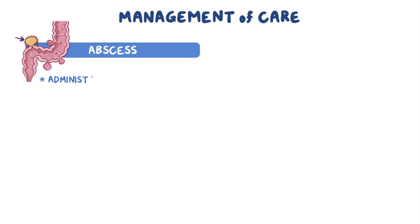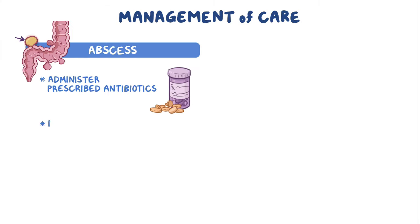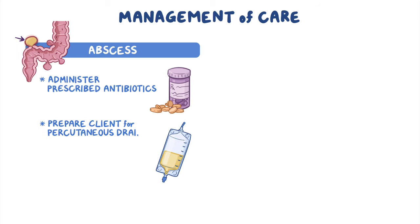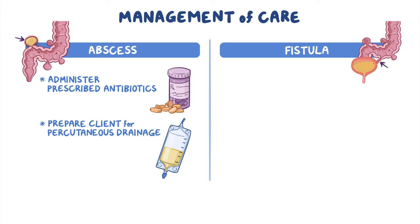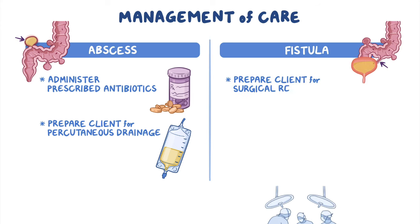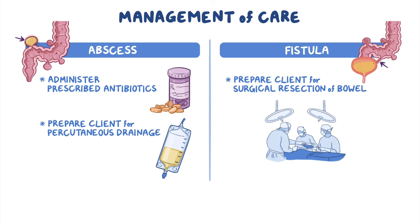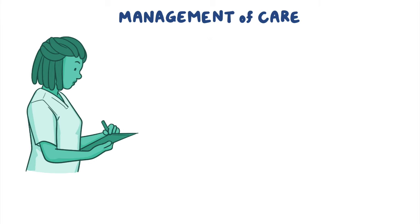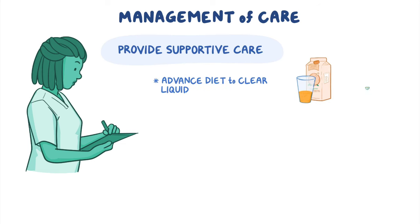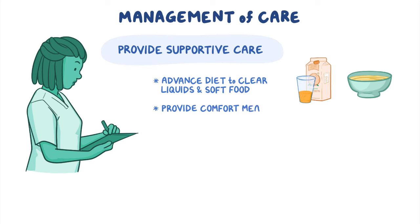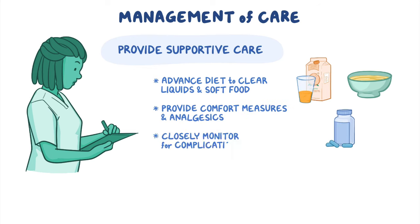If your client is diagnosed with an abscess, administer the prescribed antibiotics and prepare your client for percutaneous drainage as ordered. On the other hand, if a fistula is diagnosed, prepare your client for surgical resection of the bowel. Finally, as you care for a client with diverticular disease, continue to provide supportive care by advancing their diet to clear liquids and soft foods as tolerated, as well as providing comfort measures and analgesics as needed, and closely monitoring for complications.